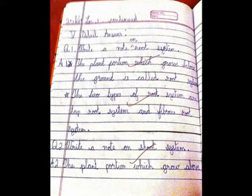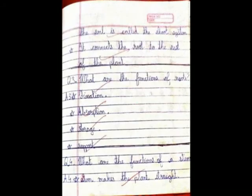Question 2: Write a note on shoot system. The plant portion which grows above the soil is called the shoot system. It connects the root to the rest of the plant.